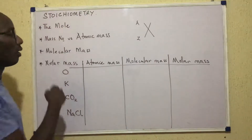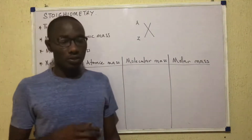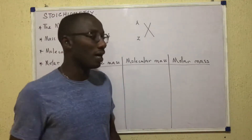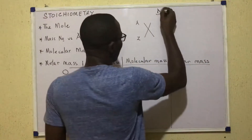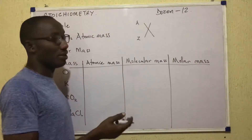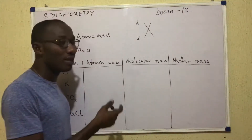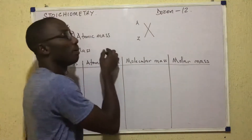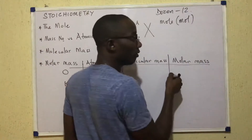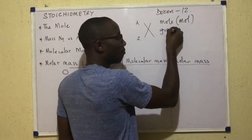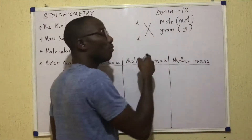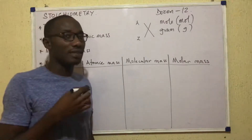Stoichiometry is all about the mole. To understand stoichiometry properly, I need to explain the meaning of the word mole. Mole as a word is just like the word dozen — the word dozen means the number 12, so when we say a dozen eggs, we mean 12 eggs. Similarly, when we say a mole in chemistry, abbreviated as MOL, it refers to the number 6.02 times 10 raised to the power 23, which we commonly call Avogadro's number.